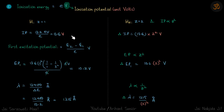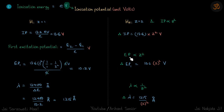For first excitation potential, the electron jumps from n = 2 to n = 1. The energy difference is E₂ - E₁ = 13.6 z² × (1 - 1/4) eV. Dividing by e gives the answer directly in volts. For helium, the first excitation potential is proportional to z², so multiply the hydrogen result by z².